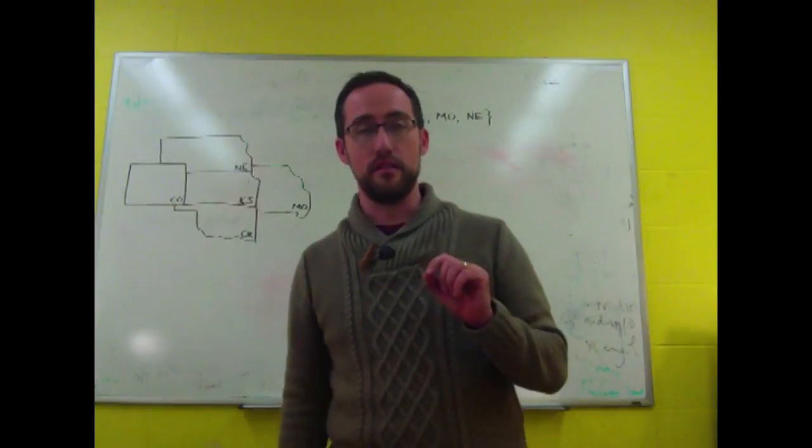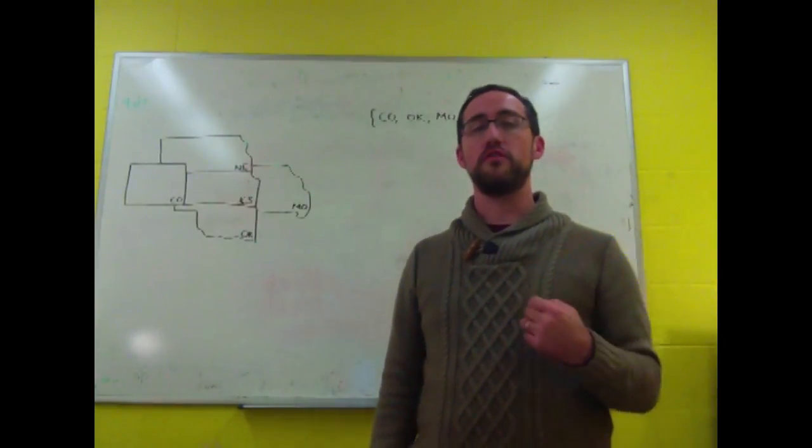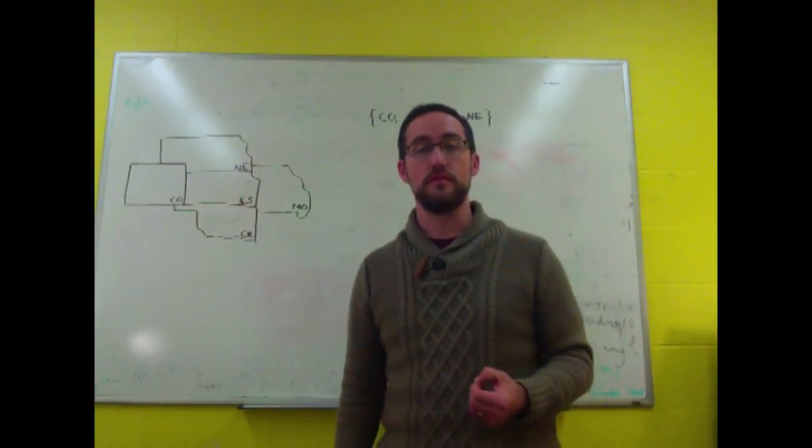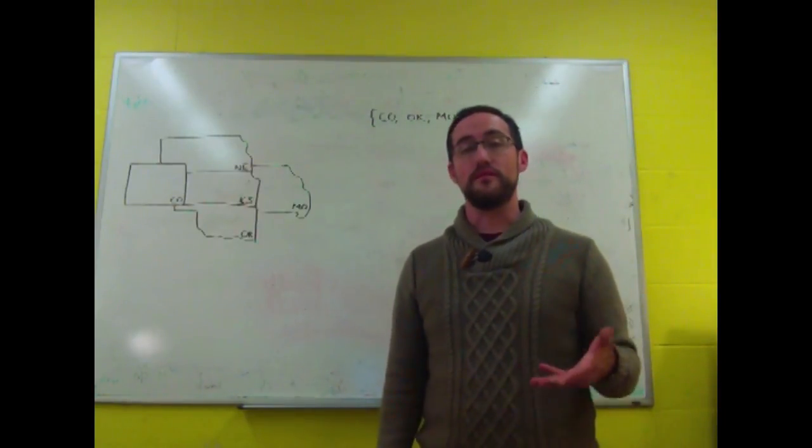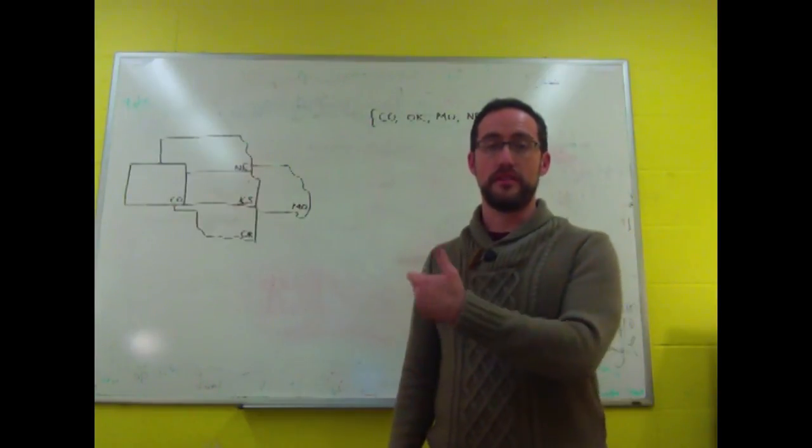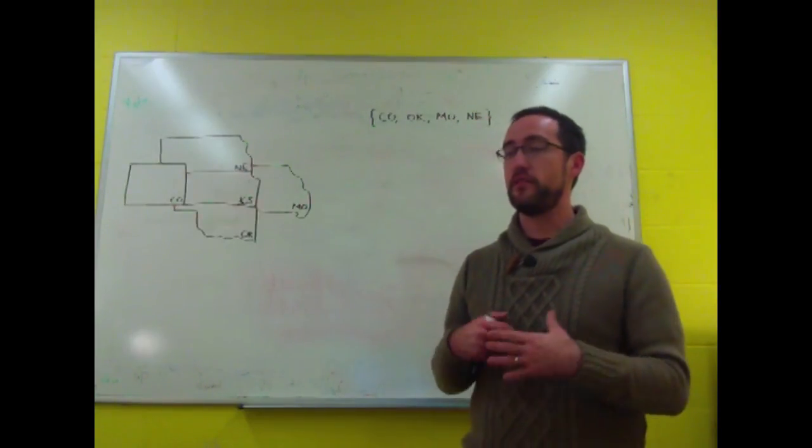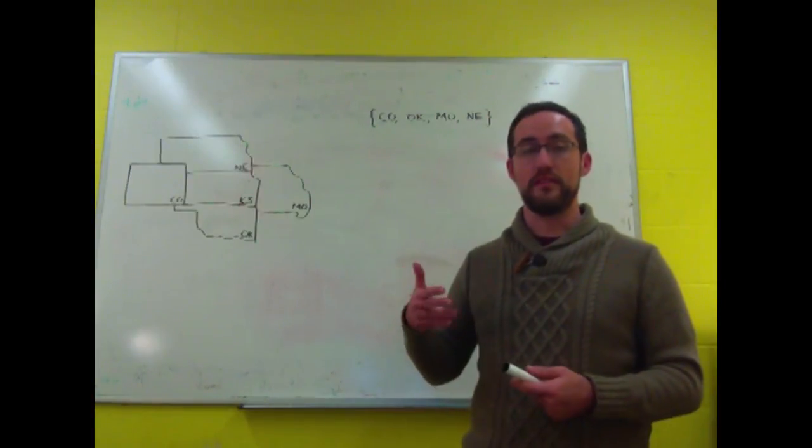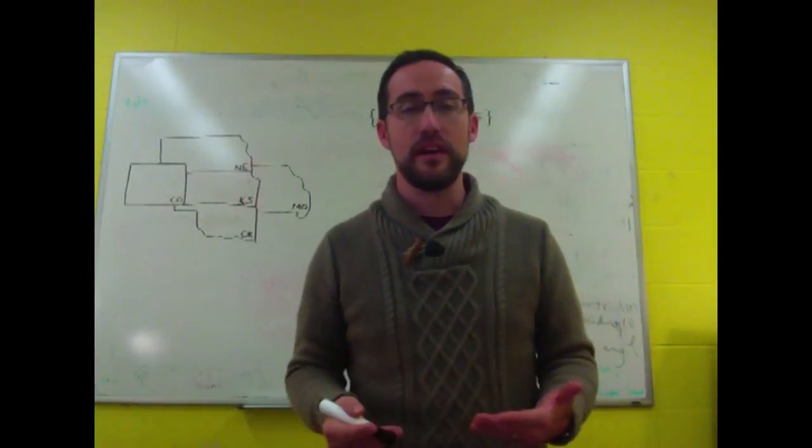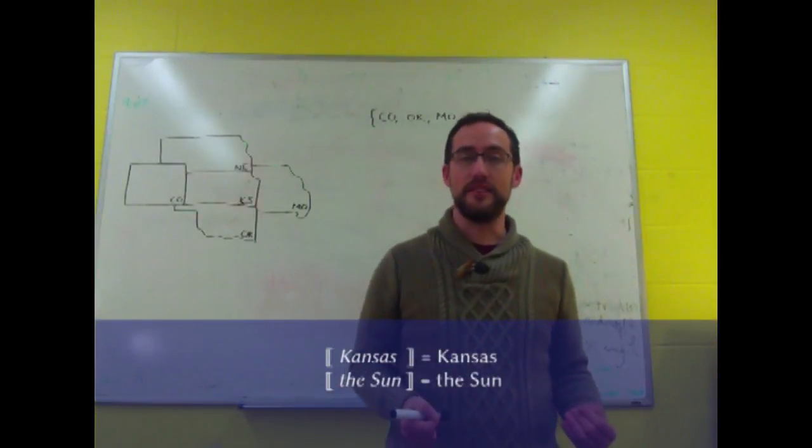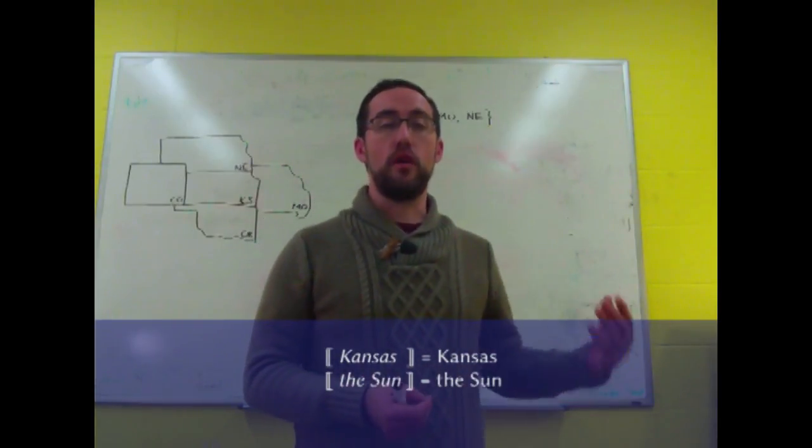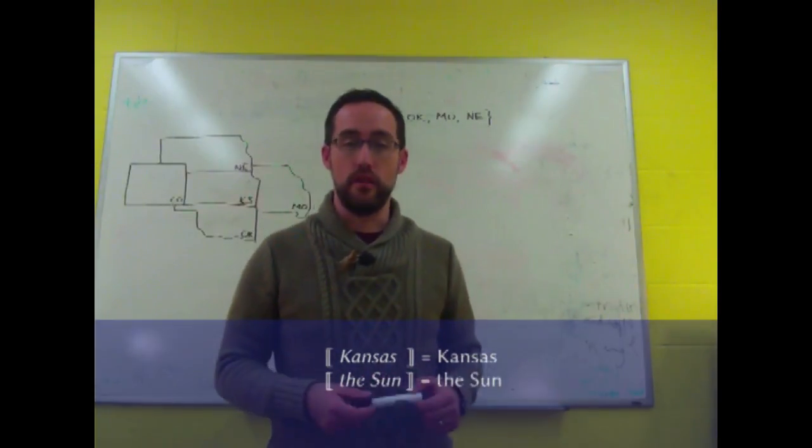Set abstraction will be a very important tool for understanding the meanings of a lot of semantic expressions, especially the ones that don't refer to particular objects. We saw, talking about denotation, that a lot of expressions refer - that is, they denote very particular objects. So the name Kansas refers to the state Kansas, and the sun refers to the big ball of gas at the center of our solar system.